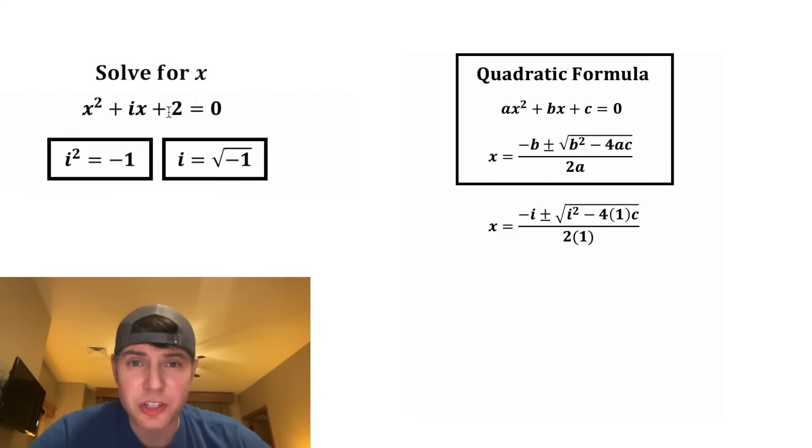And last, c is the constant, which is 2 up here, so we can change this c to 2. And now we can clean things up. Let's copy down the negative i, and the plus or minus, and the square root.